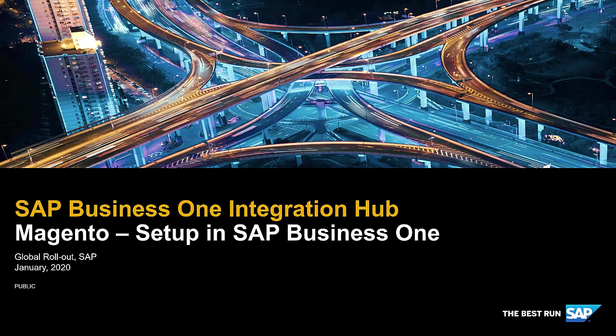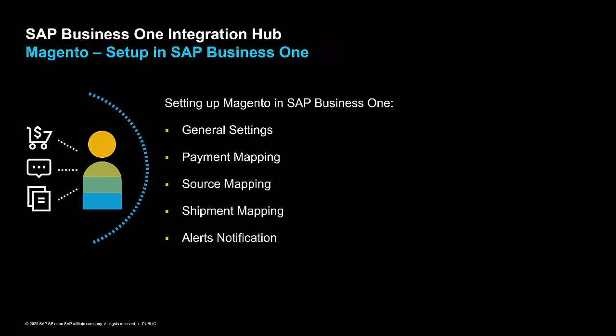SAP Business One Integration Hub: Magento Setup in SAP Business One. We would like to give you an overview on how to set up Magento in SAP Business One, which includes the topics General Settings, Payment Mapping, Source Mapping, Shipment Mapping, and Alerts Notification.